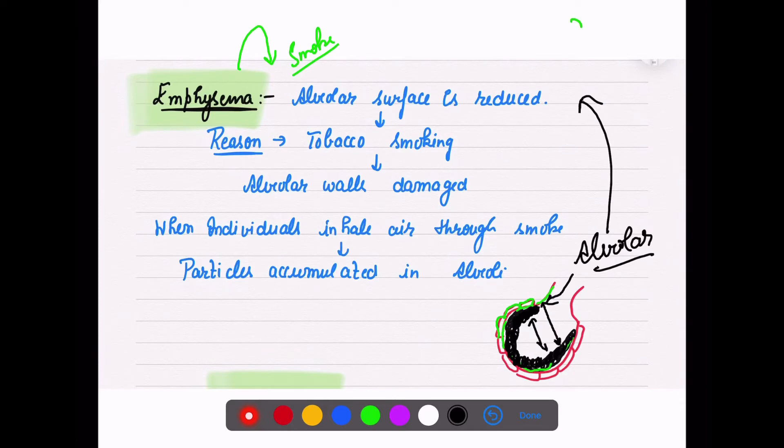The more and more particles accumulate, ultimately the alveolar walls start getting damaged. When individuals inhale air and particles through smoke, they accumulate in their alveoli and damage the alveolar surface and walls. That condition is called emphysema.